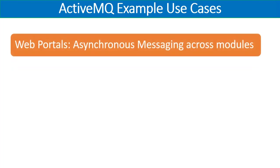Now let's talk about some use cases — in actuality you can have hundreds of scenarios, but here are a few examples. The first is a web portal: suppose you have a very advanced and complex web portal where you need asynchronous, loosely coupled messaging across modules. Having ActiveMQ as a message broker in between can help ensure there are no delays from synchronous calls — everything is asynchronous in nature.